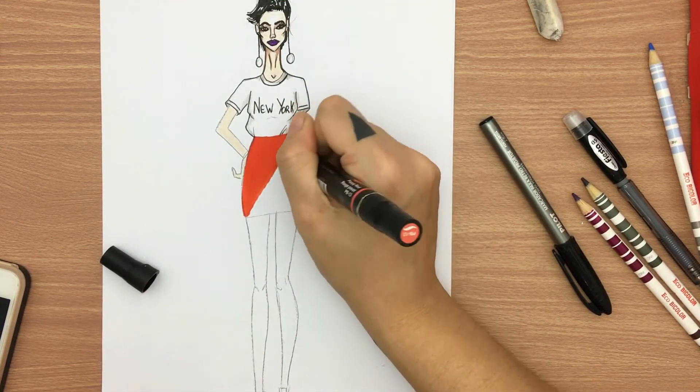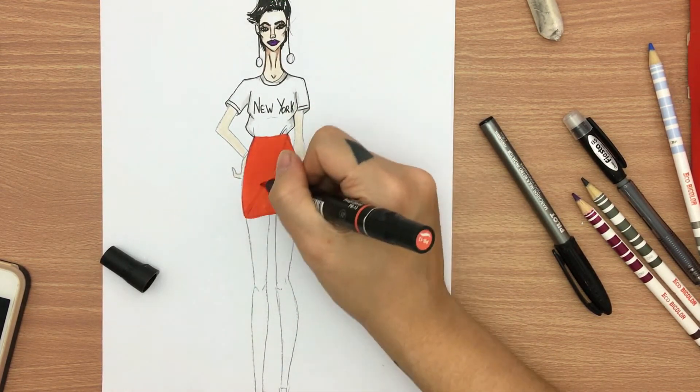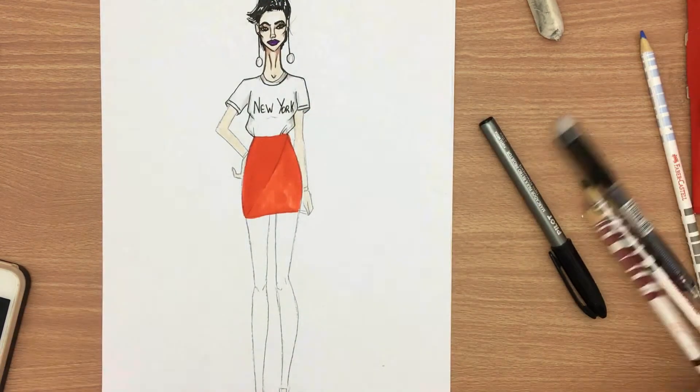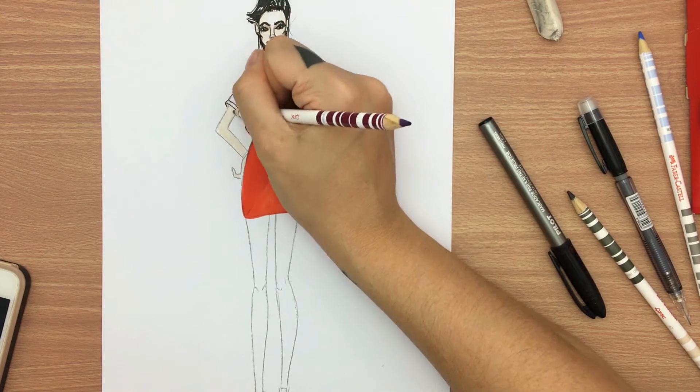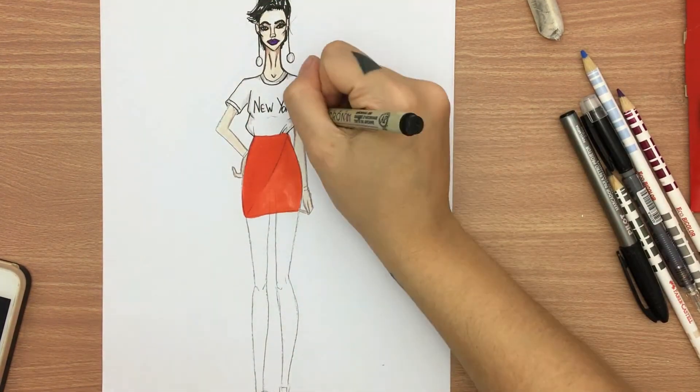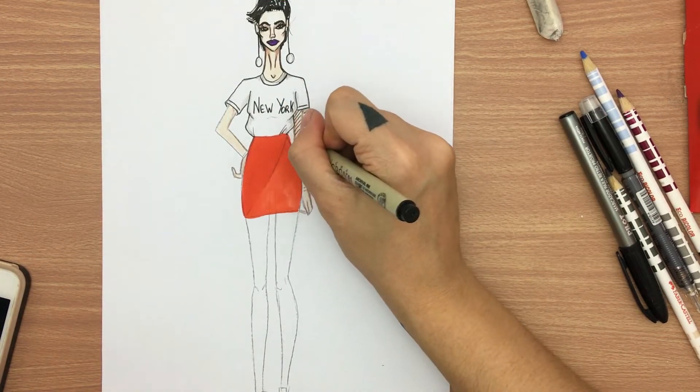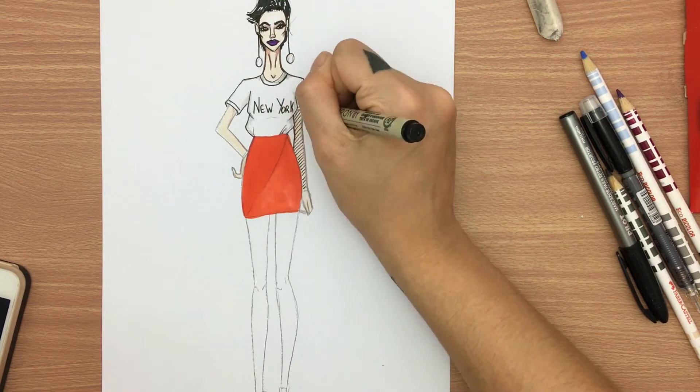E um dos canais que eu sigo e que eu adoro e que eu uso muito de referência aqui no meu canal é o F-Sketcher, é F-S-K-E-T-C-H-E-R. Gente, ela é demais, ela desenha muito. É um canal em inglês, mas eu acho que agora dá pra você ativar aquela tradução automática do YouTube. Então dá pra entender alguma coisa. E desenha visual, então você vai olhando ali o que ela tá fazendo, você consegue ter uma base, né, de tudo.